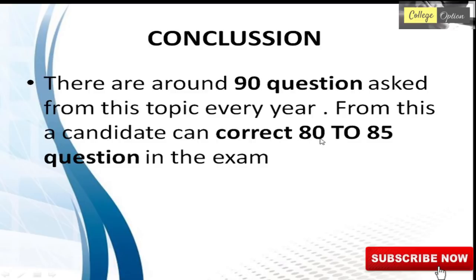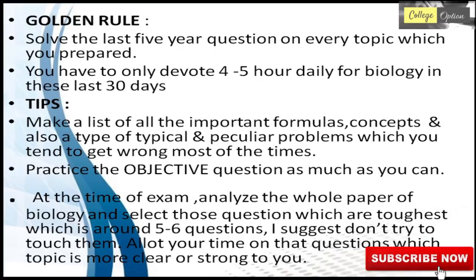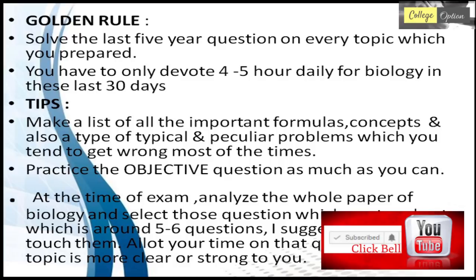For the golden rule: in the last 30 days, whichever topic you study, practice questions from the last 5 years each day, dedicating 4 to 5 hours daily. The tips are: write important formulas, concepts, or peculiar problem types on paper. Practice objective questions. During exam time, analyze the whole biology paper first, identify the toughest 5 to 6 questions, and leave them — don't spend time on them. Focus on questions you are more confident and clear about.